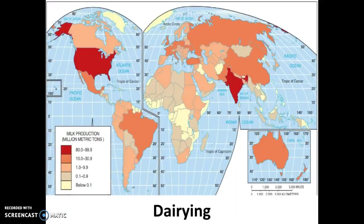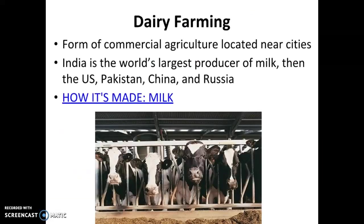Let's move on to dairying. Dairy is going to be milk from cows, but you also see milk from camels, goats, and sheep. Looking at milk production, there are a couple areas of the world where it's very high: India, the United States, Pakistan, China, and Russia. It's a form of commercial agriculture usually located near cities. India is the world's largest producer of milk, followed by the United States, Pakistan, China, and Russia.